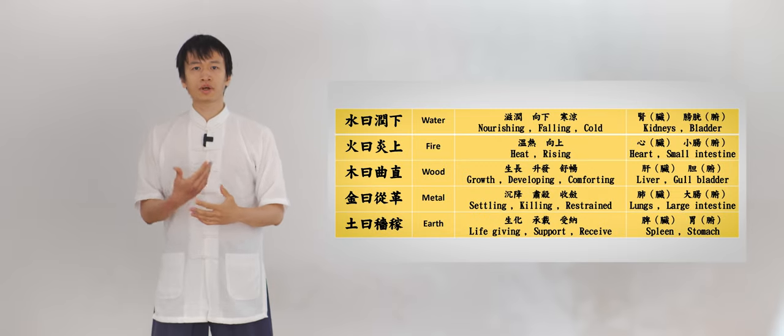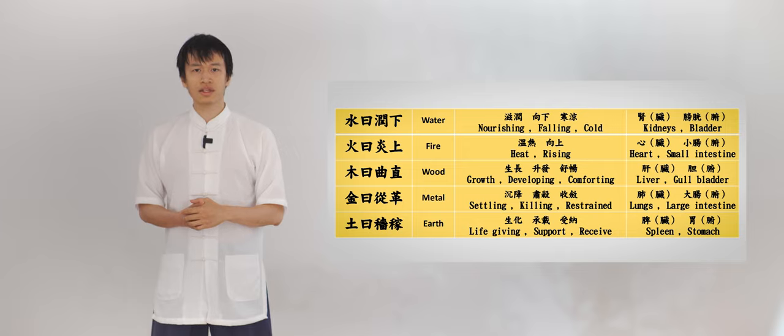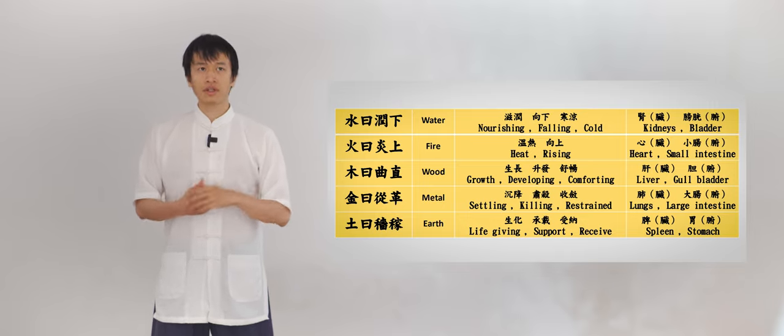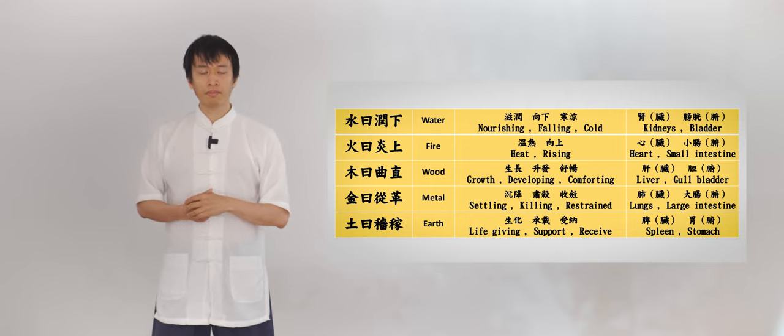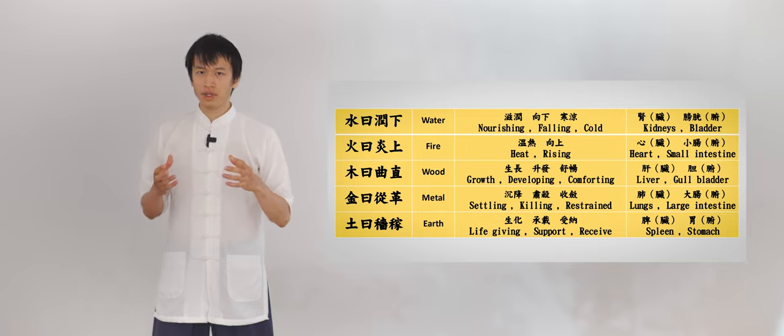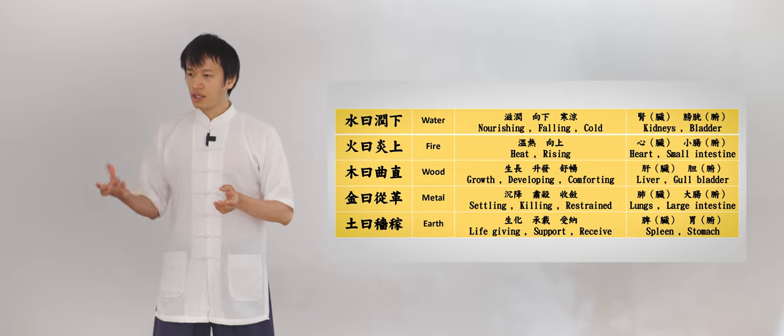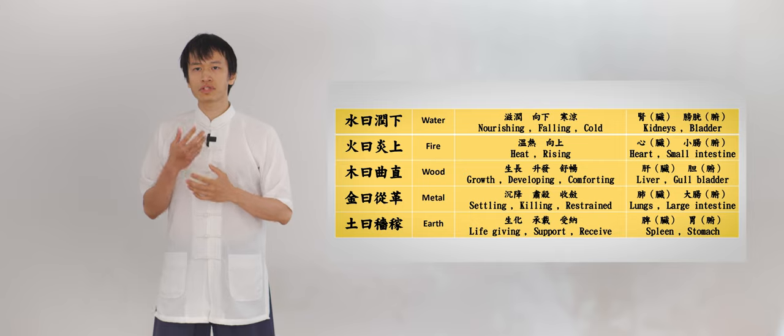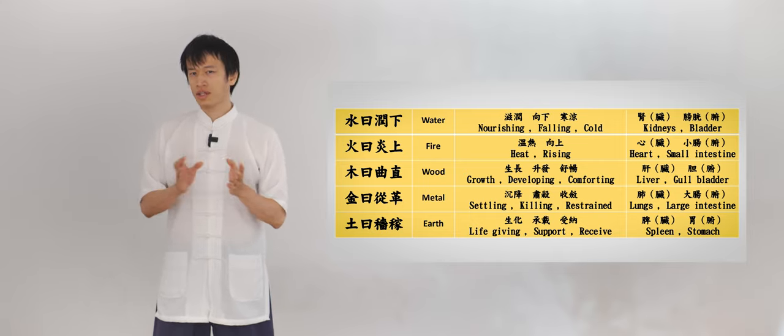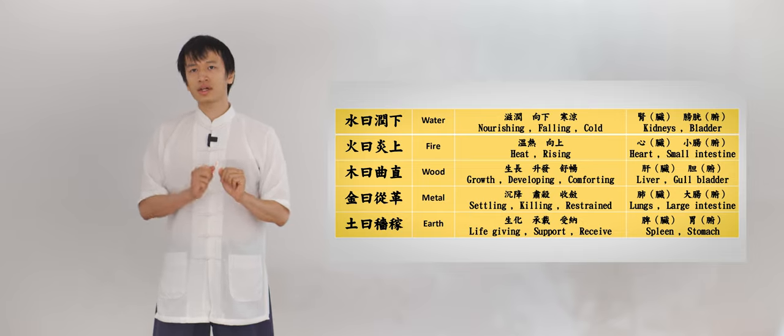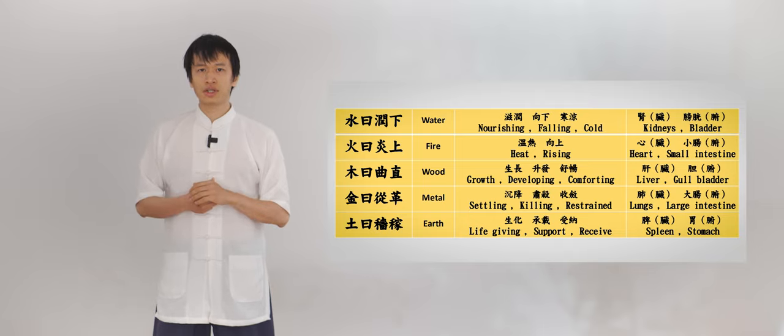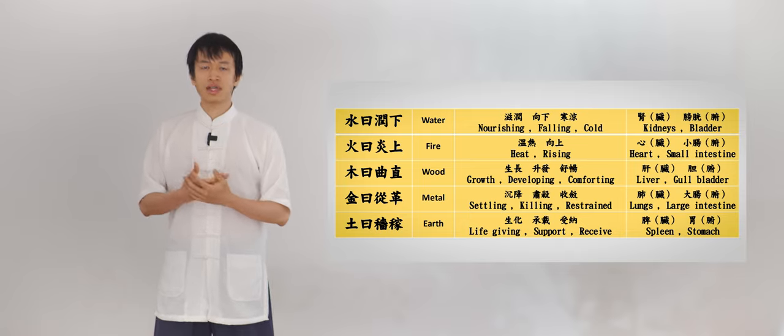So it is important to understand the correspondence of the five elements or five energies with the human body. Here, from the quotes stating the properties or tendency of the elements, we also find the correspondence to the different body parts. Starting from the water, which represents a nourishing and falling and cold power, it is associated with water in the body, which means the kidneys and the gallbladder. Here you see two parts of the organs in the classification. In Chinese medicine, there is zang and fu. The zang is the primary organ, and fu is understood as the supporting or the lesser organs. And the same goes for each one.